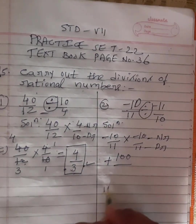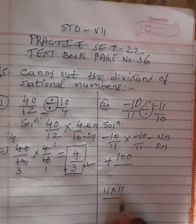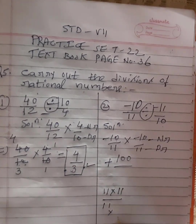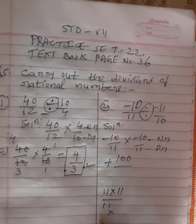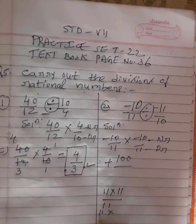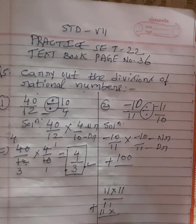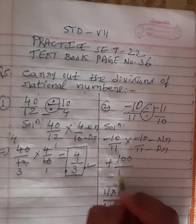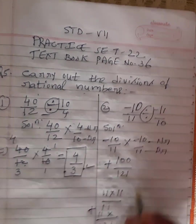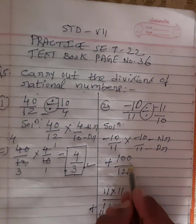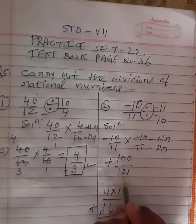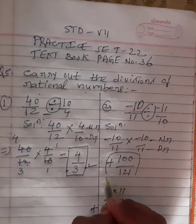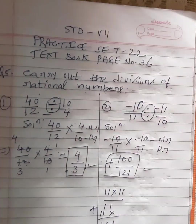11 elevens: 1 one is 1, 1 one is 1 — nothing in the units place. Again 1 one is 1, 1 one is 1, plus we put here. 1 plus 1 is 2, so we got 121. So 100 divided by 121 is not going in any particular table, so this is our final answer.